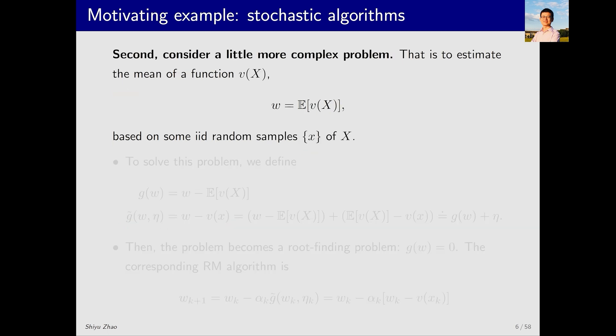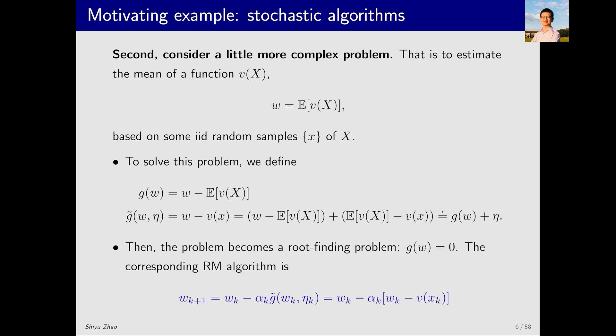Next, let's look at the second example. This example is a bit more complex than the first one. Because previously it was just w equals E[x]. Now, we have an additional function v of x. Similarly, we have some samples of x. To solve this problem, we use the same approach as before. First, I write a function g(w) equals w minus E[v(x)], and then set it to zero. Solving this, I naturally get w star equal to this expectation. I can measure v of x, which is a sample of v of x. Then, I write it as g tilde. The corresponding RM algorithm is w_{k+1} equals w_k minus alpha_k times g tilde. Substituting g tilde, we get w_{k+1} equals w_k minus alpha_k times (w_k minus v(x_k)).